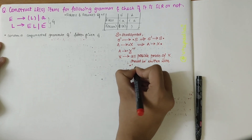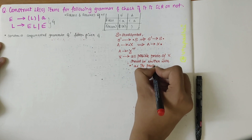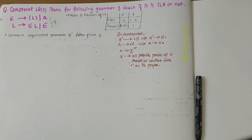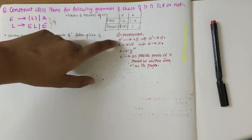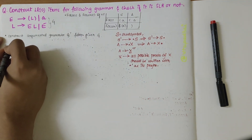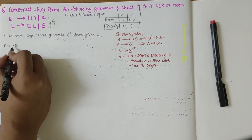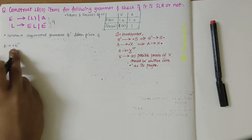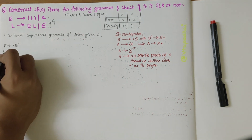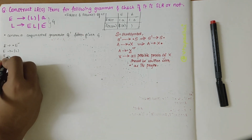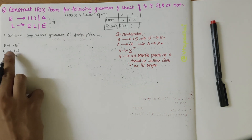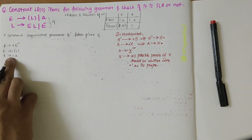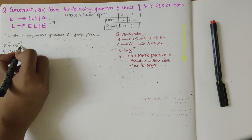The start symbol is E, so we write E dash derives dot E. After dot I have the non-terminal E, so I should write all the possible productions of E with dot as prefix: E derives dot parenthesized L, and E derives dot A. After dot I have open bracket, which is a terminal, so you need not consider it. After dot I have A, also a terminal, so don't consider it. Let's put this in a box and name it as I0.